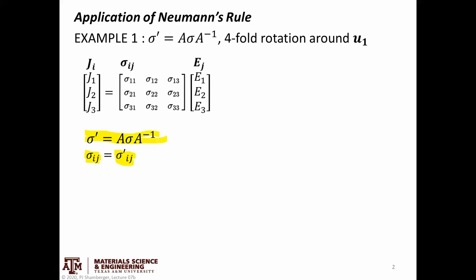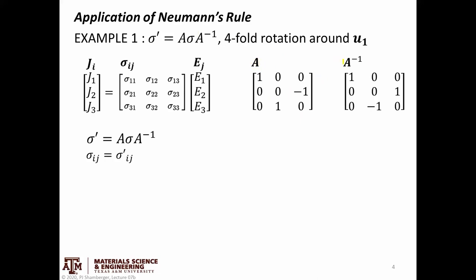We're going to apply the transformation first. In this case, we're doing a four-fold rotation around u1. For a 90-degree counterclockwise rotation, this is what A looks like. The inverse of A is basically a 90-degree clockwise rotation. I can double-check this: if I multiply A times its inverse, A times A⁻¹, I should get the identity matrix — a diagonal matrix where the diagonals are 1. And it does, but you can go ahead and check this yourself.